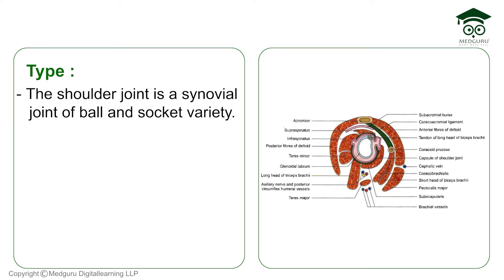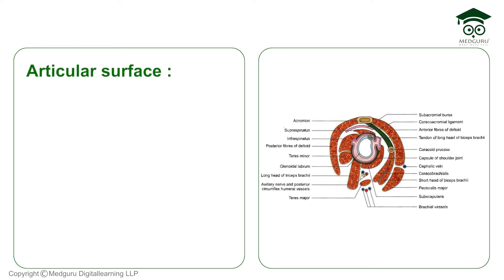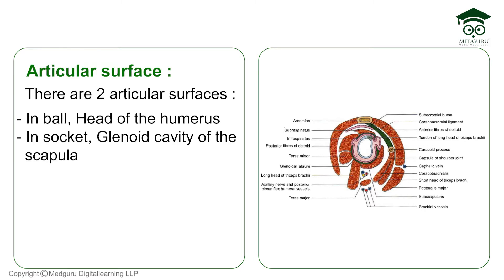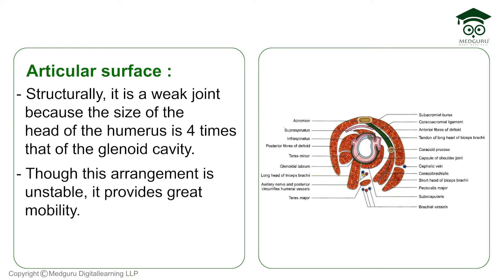So let's talk about the type. The shoulder joint is a synovial type of ball and socket joint. The articular surface consists of the ball — the head of the humerus — and the socket — the glenoid cavity of the scapula. Structurally it's weak because the head of the humerus is four times the size of the glenoid cavity, so it's not stable, but on the positive side we can do a lot of movement from the shoulder.